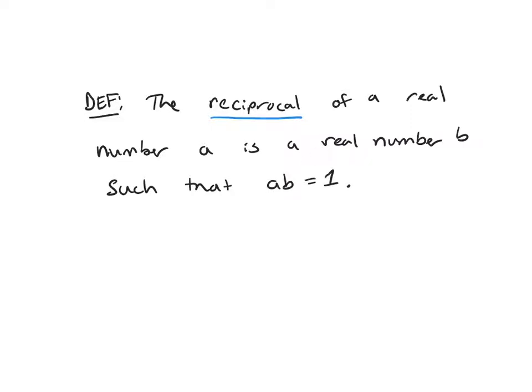Such that when I take and multiply a and b together, I get 1. So we're going to rewrite some statements formally.